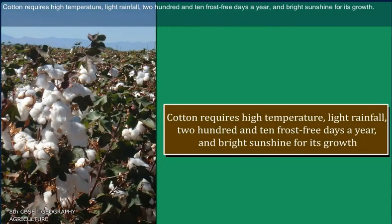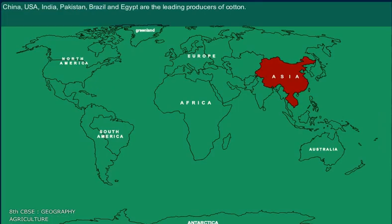Cotton requires high temperature, light rainfall, 210 frost-free days a year, and bright sunshine for its growth. China, USA, India, Pakistan, Brazil, and Egypt are the leading producers of cotton.